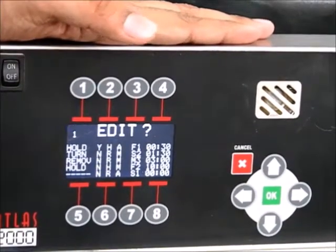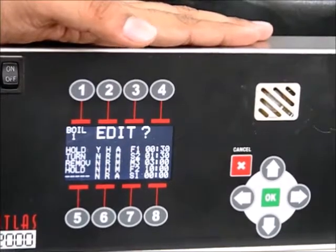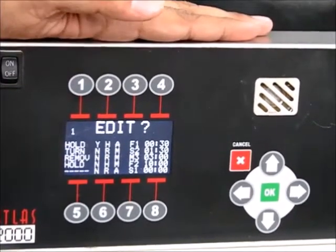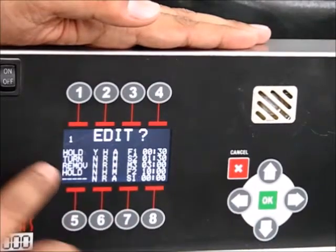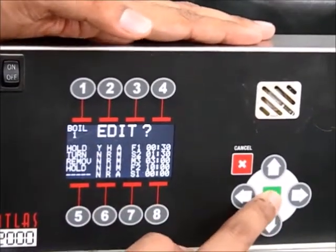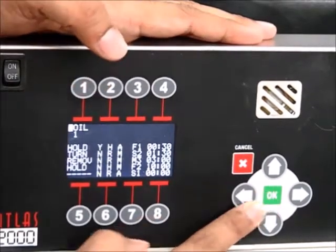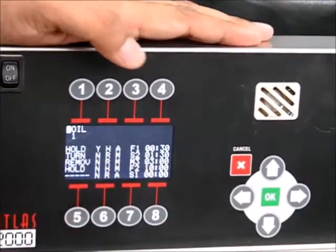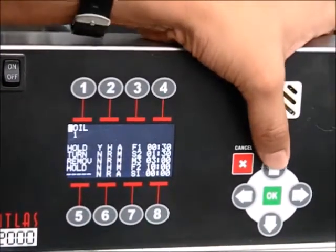To change a menu item name, press the button matching an item. Its name blinks in the upper left and edit question mark displays. Press OK. The cursor will be blinking.